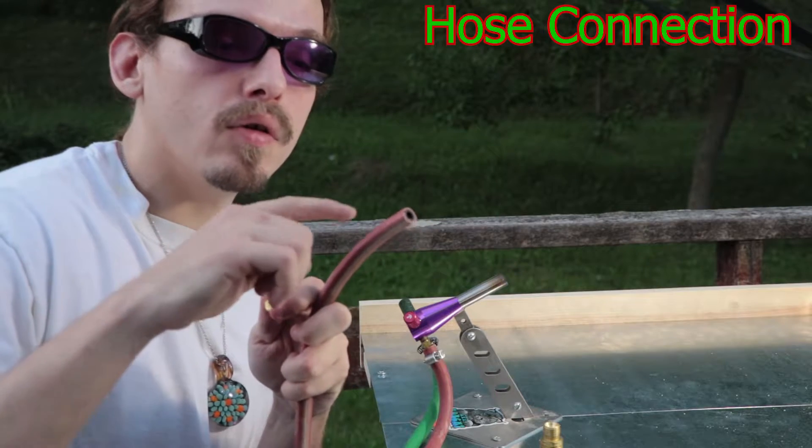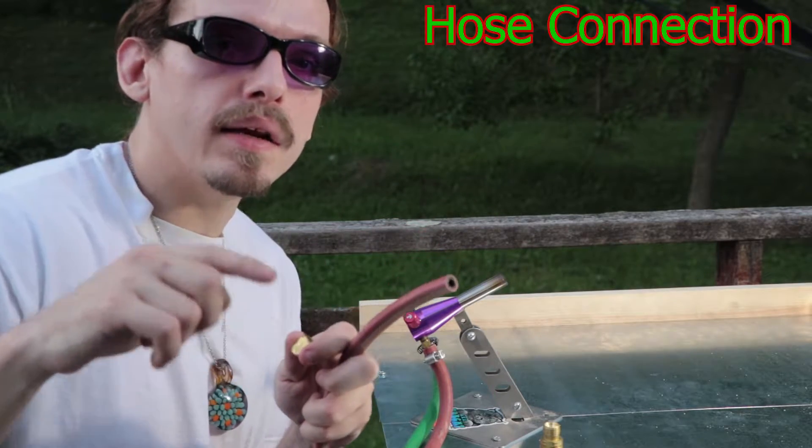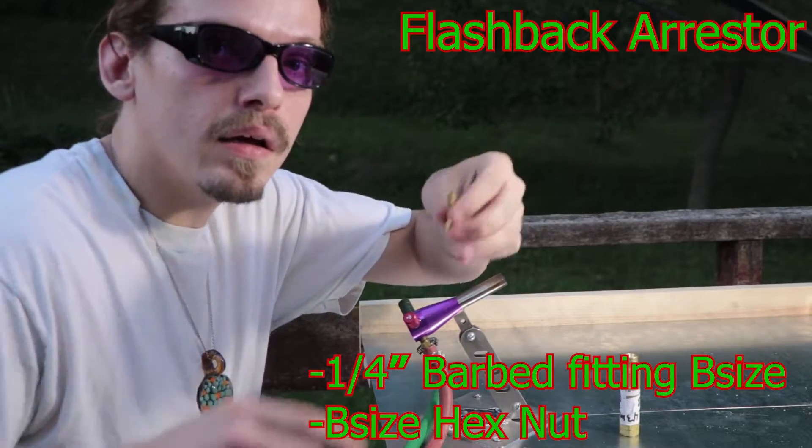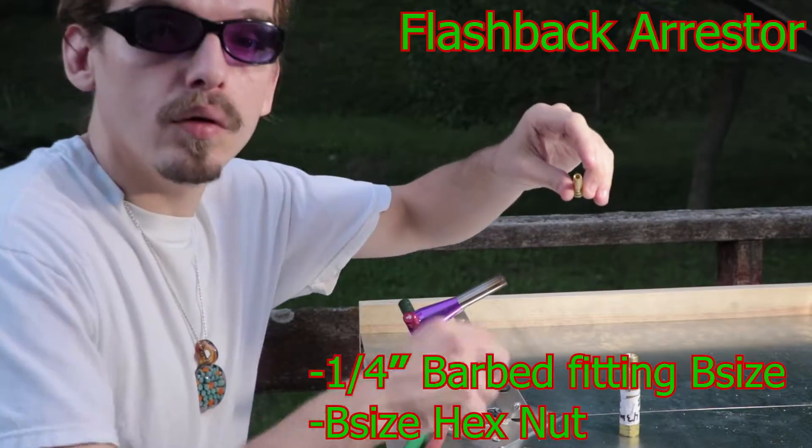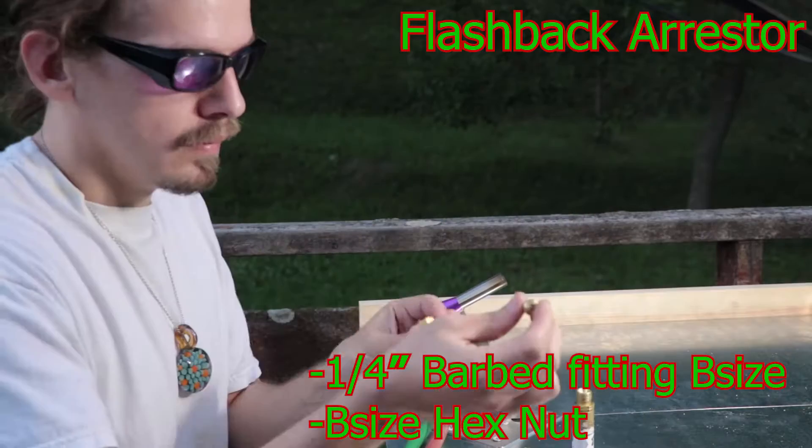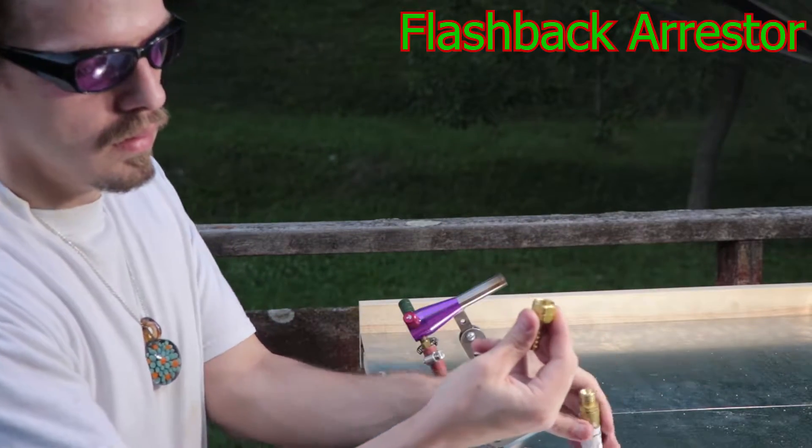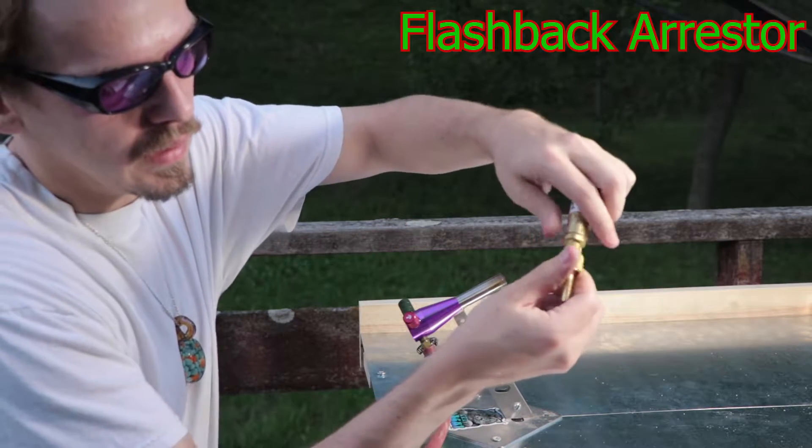And next I'll attach a few parts to my propane hose. That way I can attach it to the flashback arrester. I'm going to have to use a barbed fitting and another piece in order to screw it onto there. Just got to put this barbed fitting in there and screw it onto here.